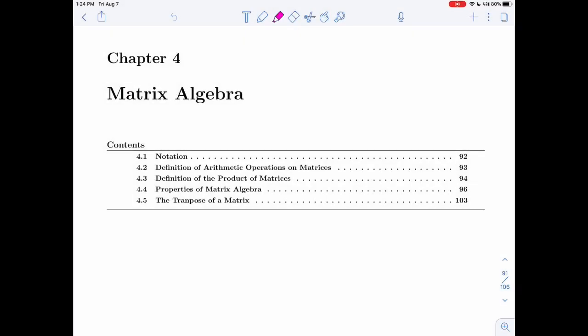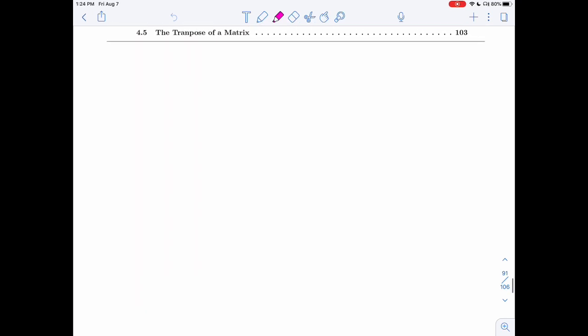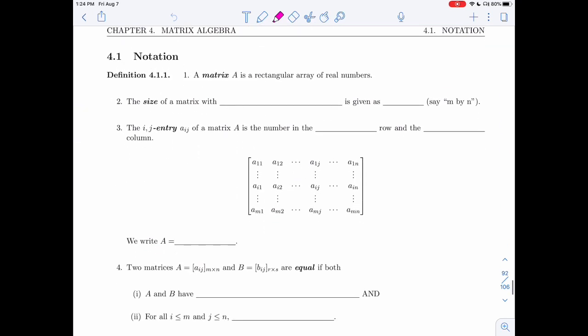We're now ready to talk about matrix algebra. That will be the topic of chapter four. Let's start with some notation. We're going to call a matrix a rectangular array of real numbers. You've seen them before, especially in the last chapter. We'll look at matrices in this chapter without talking about a specific linear system or anything like that.